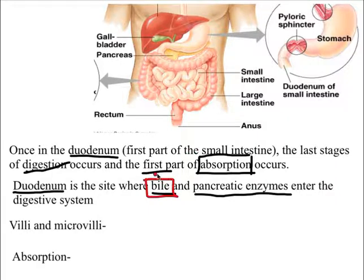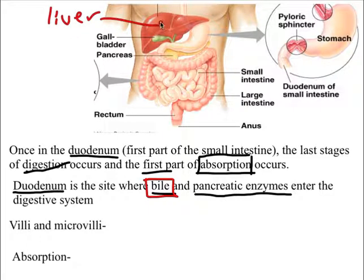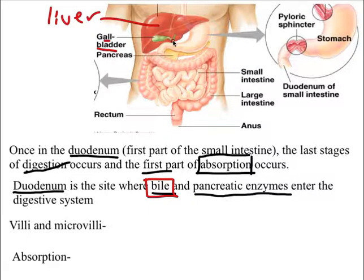At the duodenum, bile and pancreatic enzymes enter the digestive system. Bile helps break down fats and is made in the liver. Once the liver makes bile, it goes to the gallbladder, then through the bile duct — a tube — into the duodenum to help break down any remaining fats.